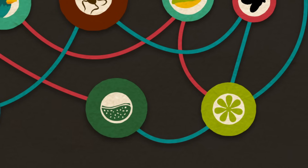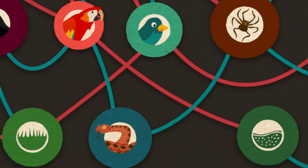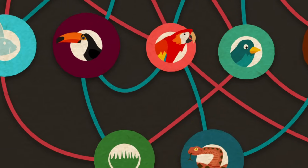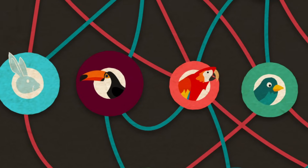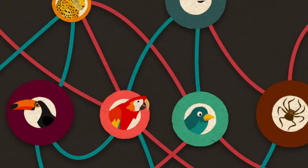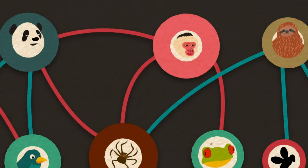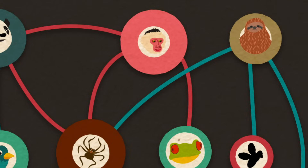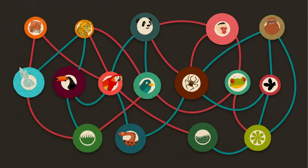The natural world is full of these mechanisms, formed by the links between living and non-living things, that build resilience by governing the way populations and food webs respond to events.